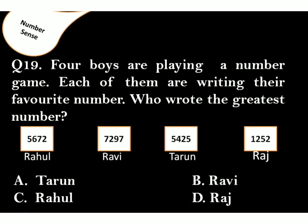Four boys are playing a number game. Each of them are writing their favorite number. Who wrote the greatest number? The correct answer is option B. Because Ravi has the greatest number at thousands place.